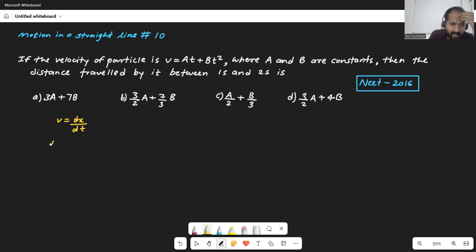So dx will be V dt, right? V is already given. So dx will be V, how much it is? At plus Bt² and that dt.